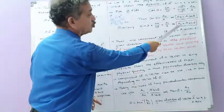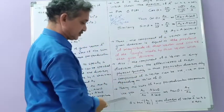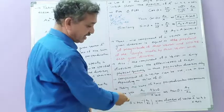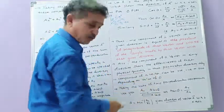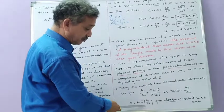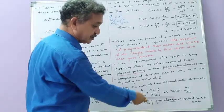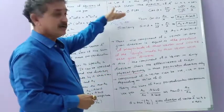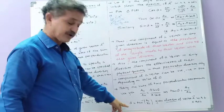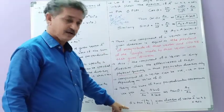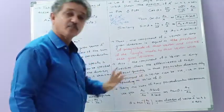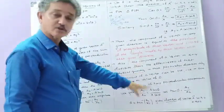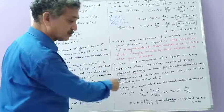Now, taking the ratio of the two components, Ay/Ax = A sin θ / A cos θ = tan θ. Therefore θ = tan⁻¹(Ay/Ax) gives the direction of vector A with respect to the x-axis. So the direction can be determined using this formula: θ = tan⁻¹(Ay/Ax).